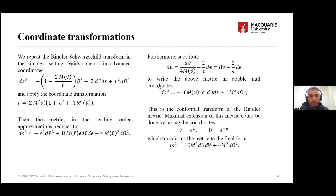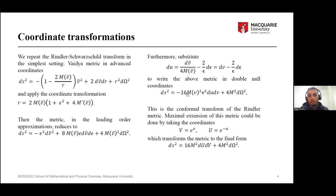After doing a further transformation and transforming to U coordinates, we get a metric in double null coordinates, U and V. If this conformal factor were constant, this would be a Rindler metric. However, what we obtain now is a conformally transformed Rindler metric in double null coordinates.